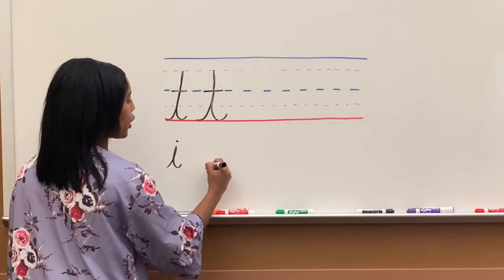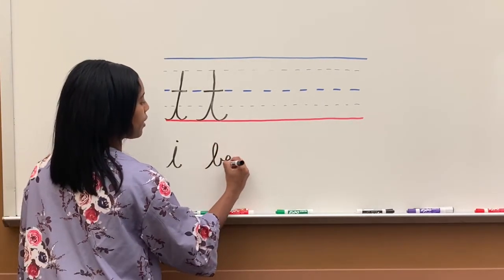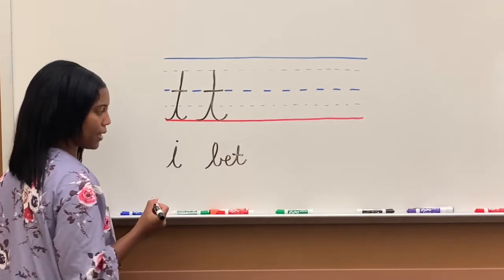So if I'm writing the word bet, I finish, then I cross my T.